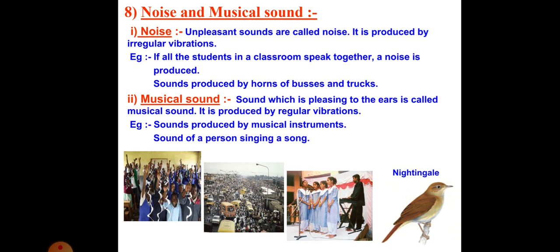Sound which is pleasing to hear is called musical sound. It is produced by regular vibrations. As we know, sound is produced by the vibrations of an object. If the vibrations are regular, it is musical sound. If the vibrations are irregular, it becomes noise. An example of musical sound is the sound produced by a musical instrument, or the sound of a person singing a song — it is pleasing to hear, so it is called musical sound.